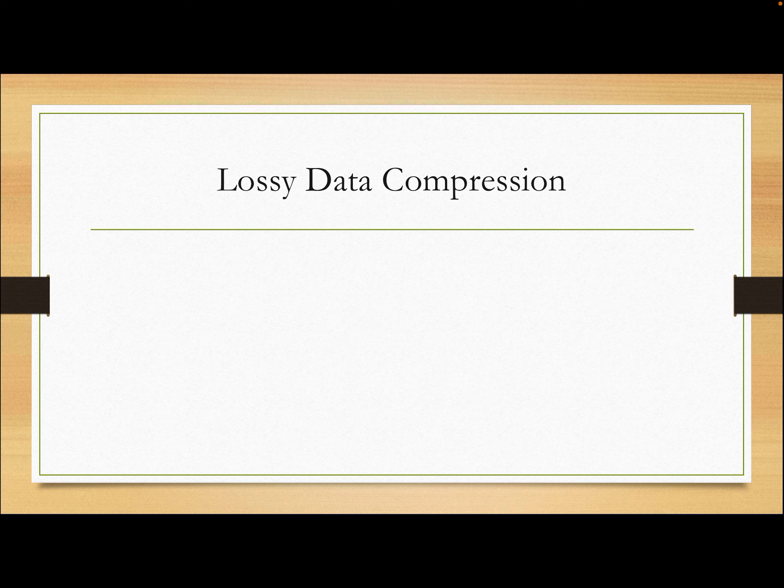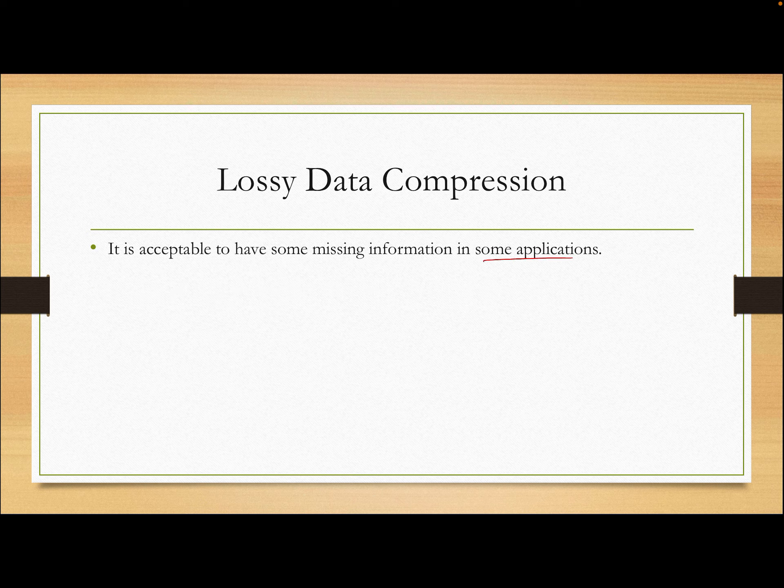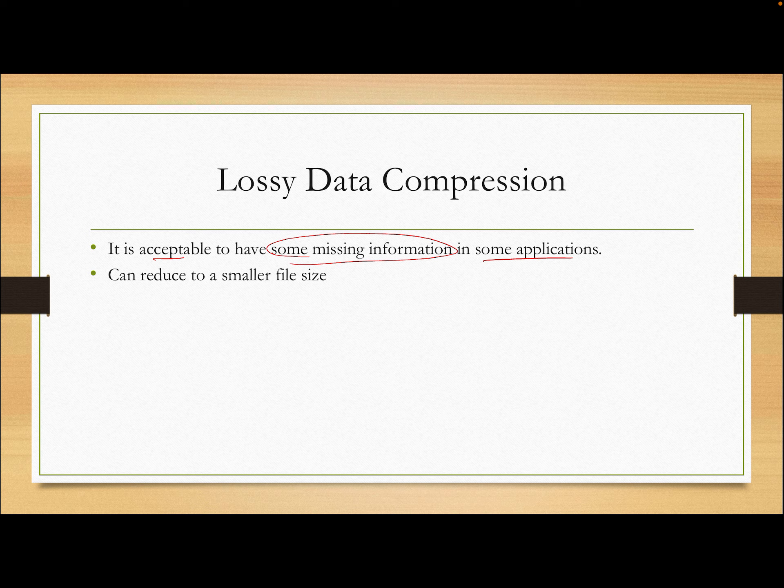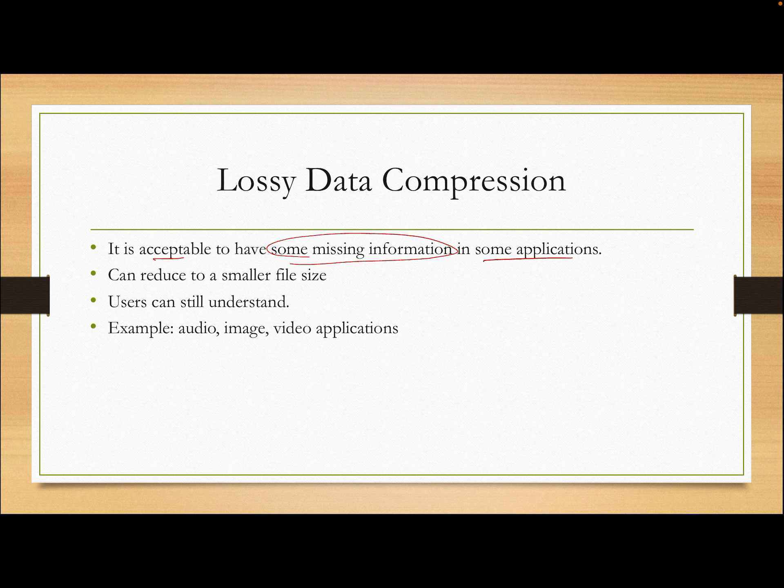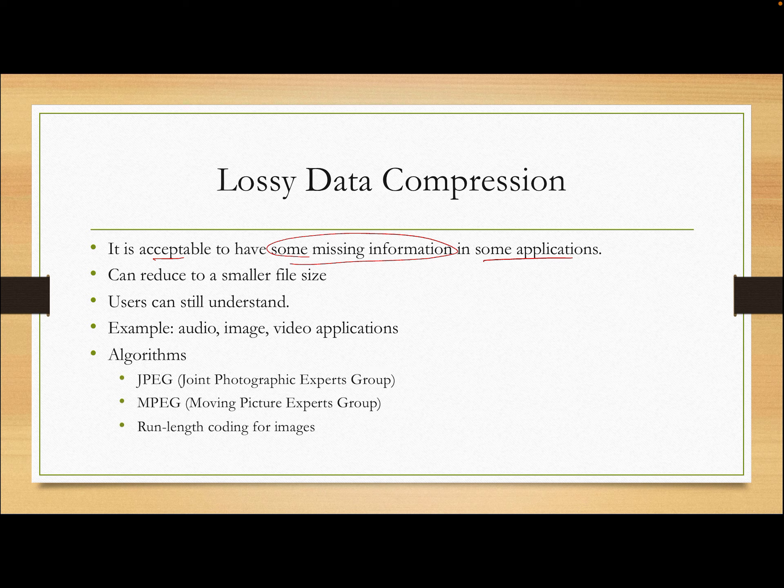Now let's look at the lossy data compression. In some case, some application, it is acceptable to have some missing information. You may think, oh, why is that? Because you want to reduce the file. If you allow for lossy data compression, usually you can reduce the file size to a much, much smaller size. And you can also choose how much resolution or how much detail you would give the user. So if you can compress in a good way, your user still understand what you are trying to transmit. But the resolution or the detail may be lost. An example is the audio image and video application and algorithm that we have heard about. It's JPEG, MPEG and the run-length coding for images.